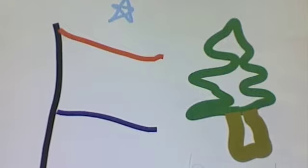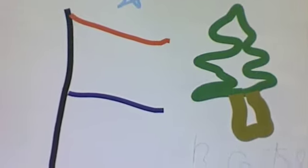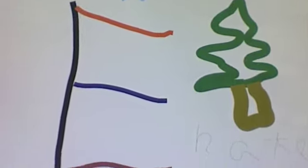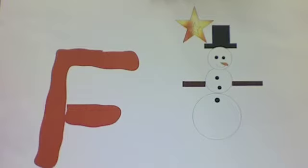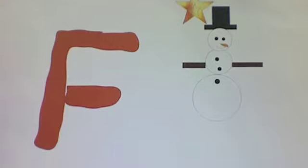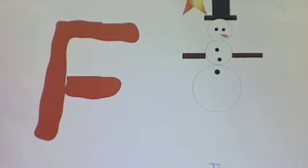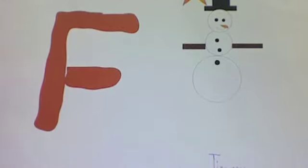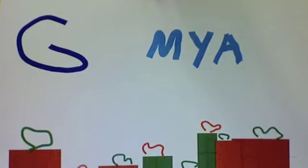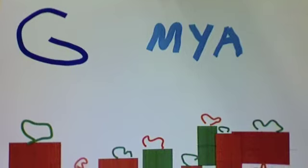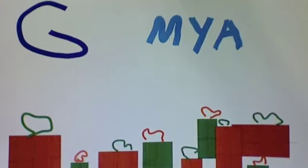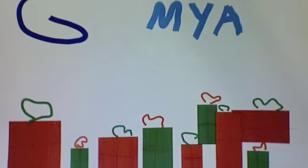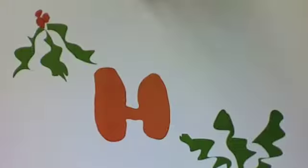E is for evergreen topped with a star. F is for Frosty, a snowman white and round. G is for gifts, a joy to give and receive. H is for holly with its festive green leaves.